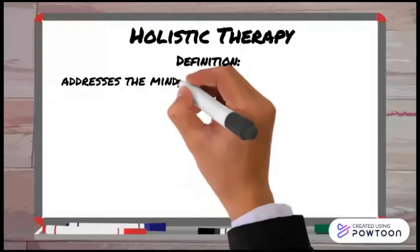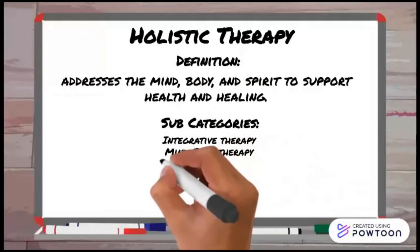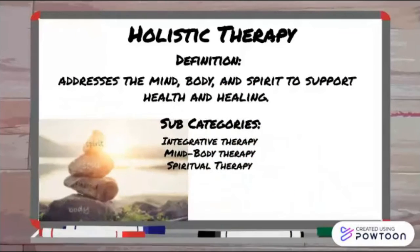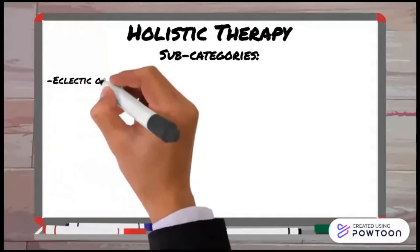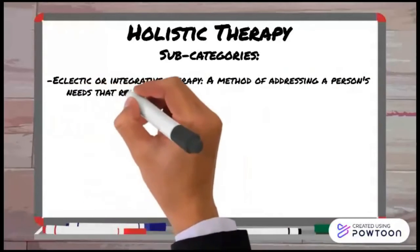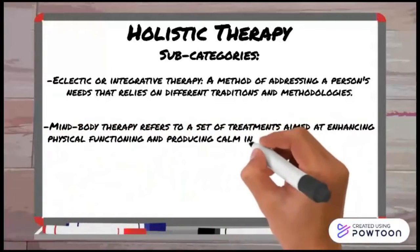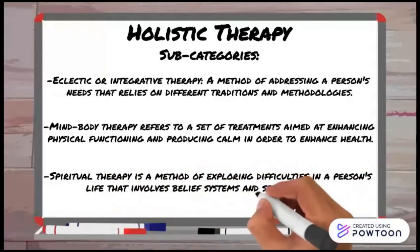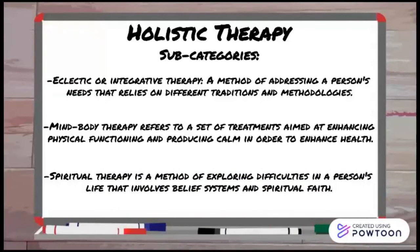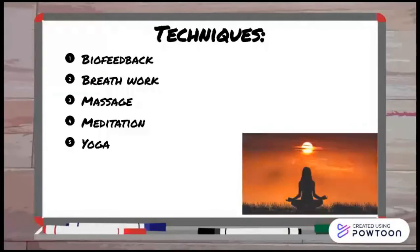Furthermore, we have holistic therapy, which addresses the mind, body, and spirit to support health and healing. It is divided into Integrative Therapy, Mind-Body Therapy, and Spiritual Therapy. Eclectic or Integrative Therapy is a method of addressing a person's needs that relies on different traditions and methodologies. Mind-Body Therapy refers to treatments aimed at enhancing physical functioning and producing calm in order to enhance health. Spiritual Therapy is a method of exploring difficulties in a person's life that involves belief systems and spiritual faith. The techniques include biofeedback, breathwork, massage, meditation, and yoga.